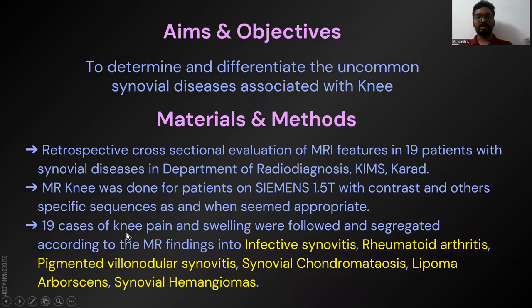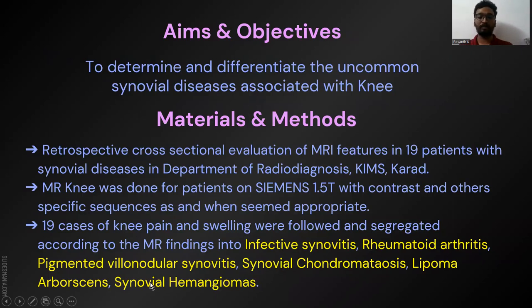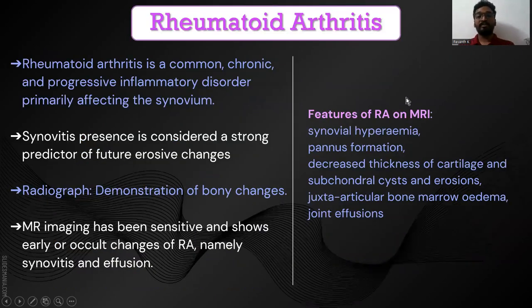Nineteen cases of knee pain and swelling were included in our study, in which infective synovitis, rheumatoid arthritis, pigmented villonodular synovitis, synovial chondromatosis, lipoma arborescens, and synovial hemangiomas were identified. First, coming to rheumatoid arthritis.